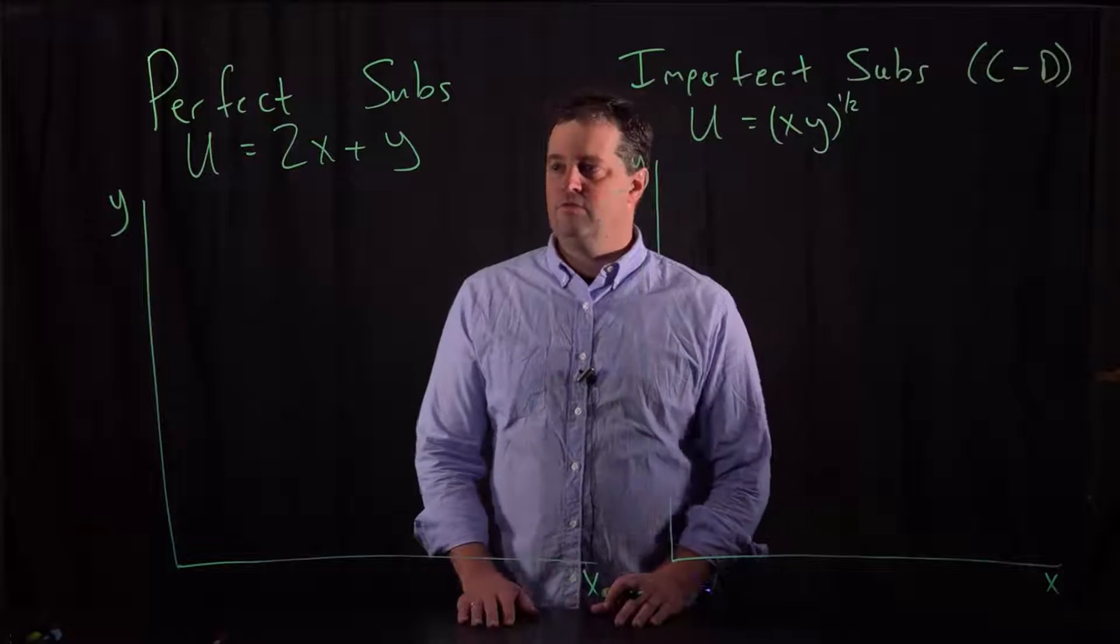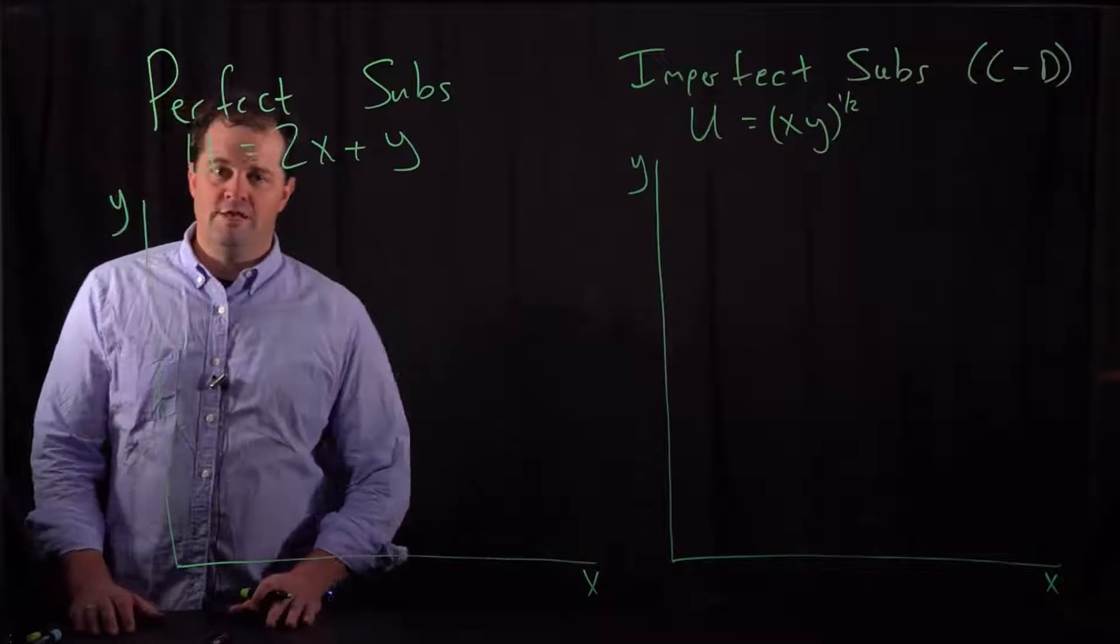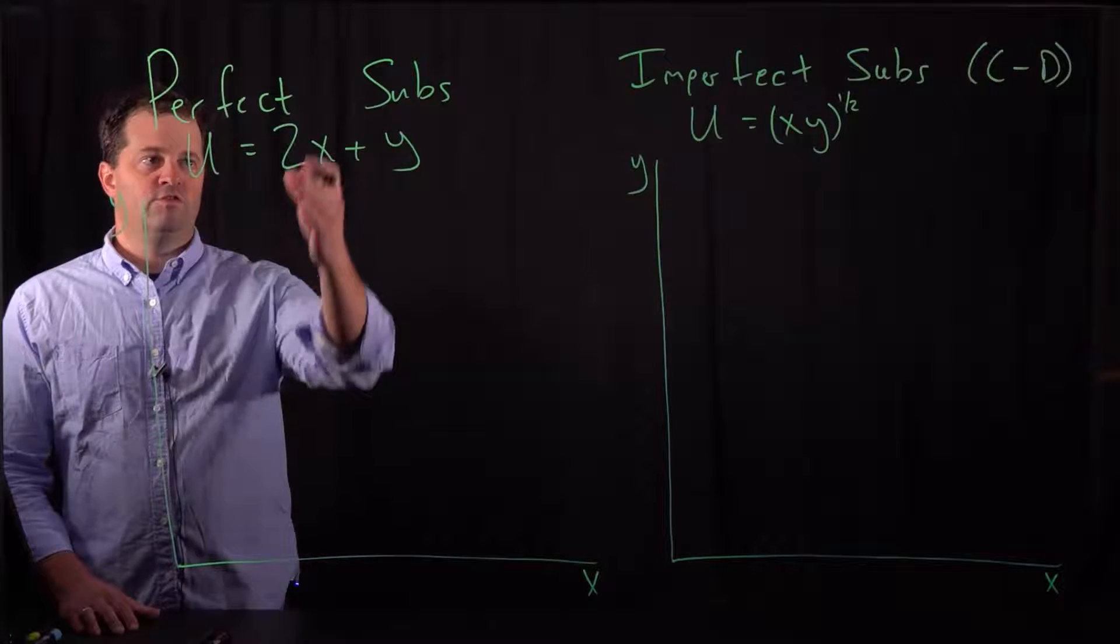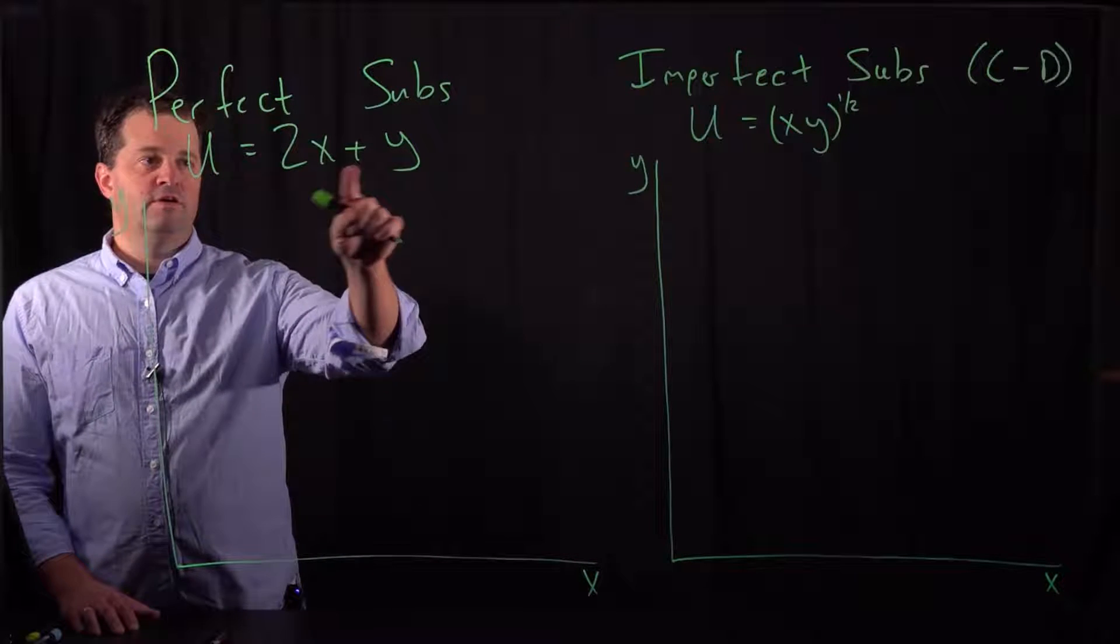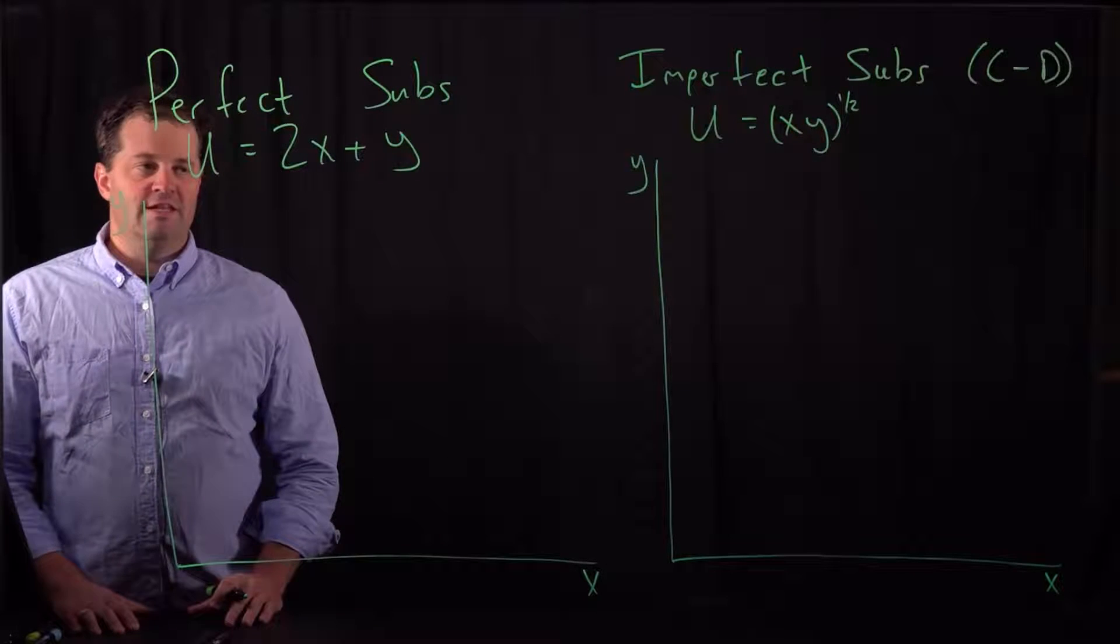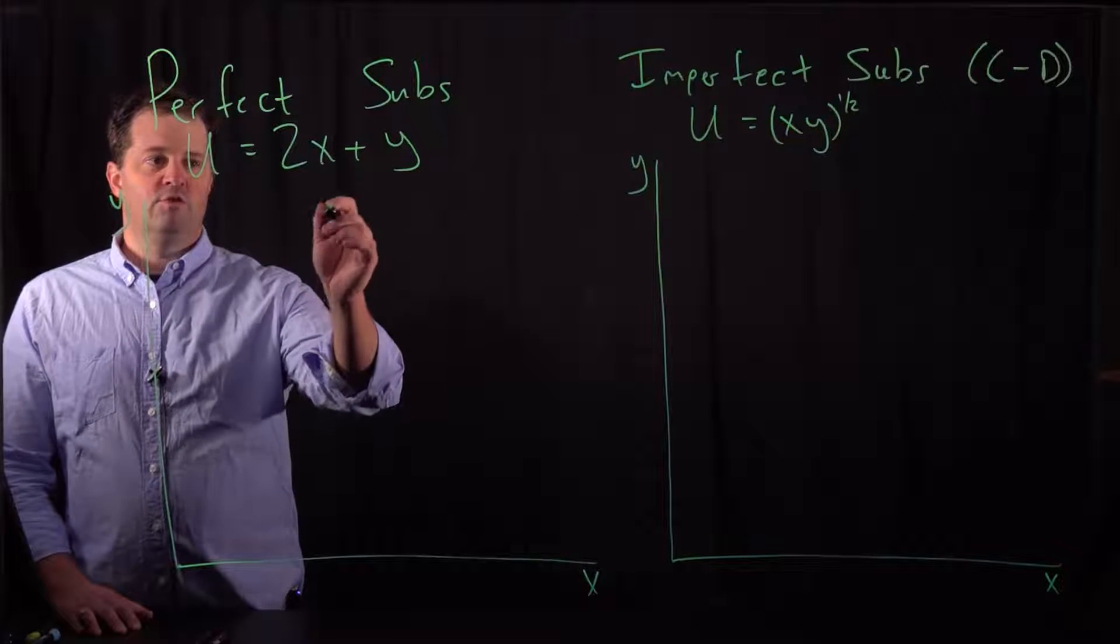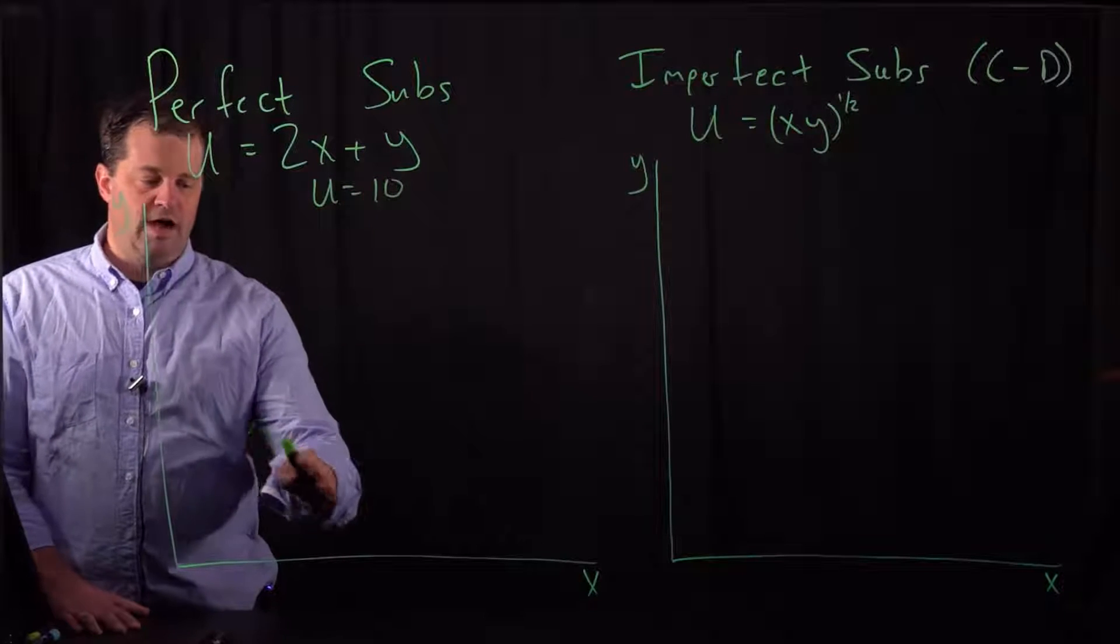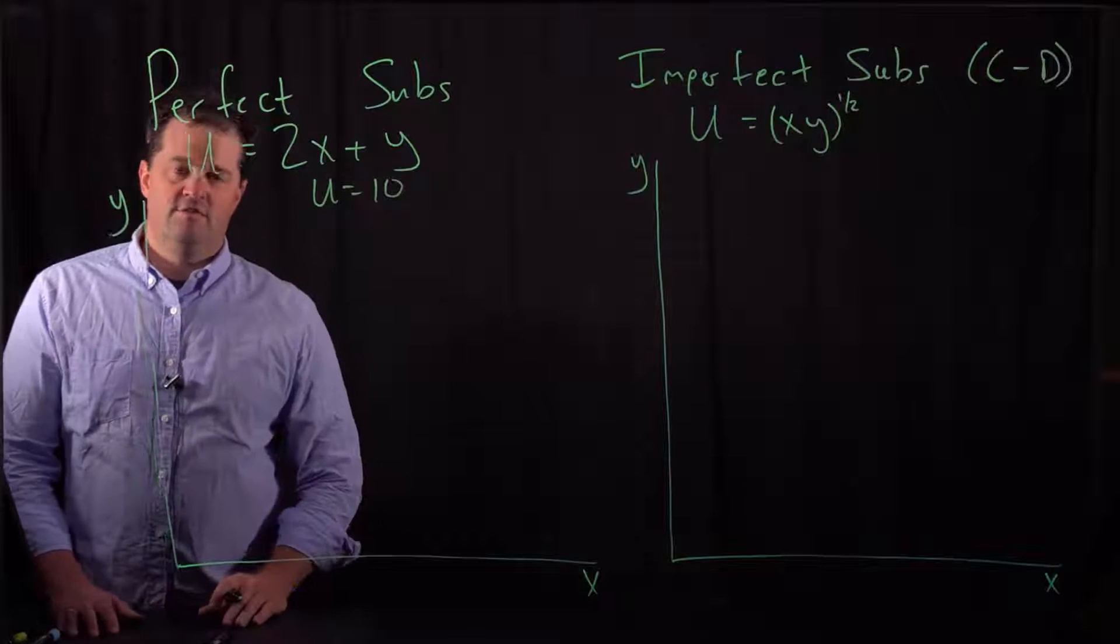Let's start over here with perfect substitutes, which is kind of an odd way to think about utility because there's no diminishing returns to consuming more X or Y. Every time that a consumer gets another unit of X or Y, utility increases by the amount of the coefficient that's in front of X or Y. Now, what we want to do is build an indifference curve, and I'm just going to choose a level of utility that a consumer can reach. Let's say utility equal 10, and I want to show all the possible combinations of X and Y that allow for this consumer to get to utility equal to 10.